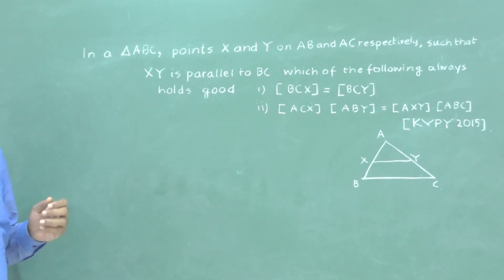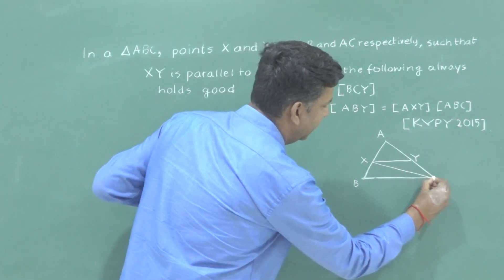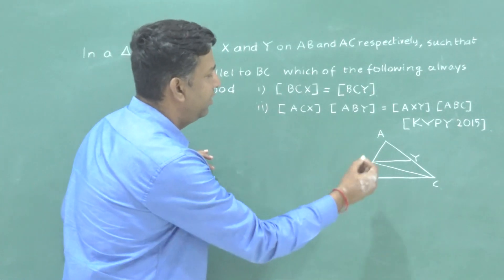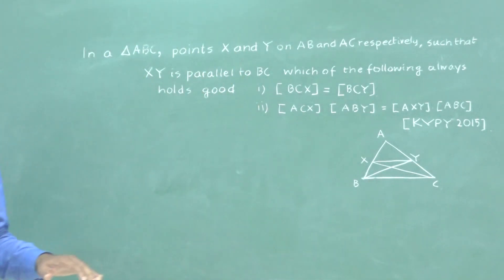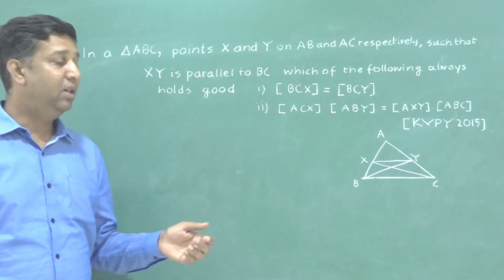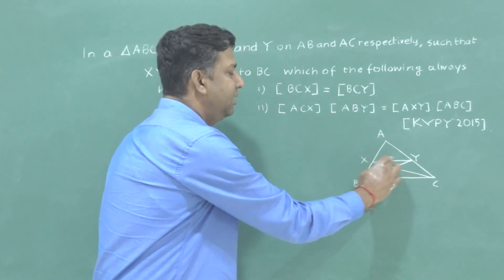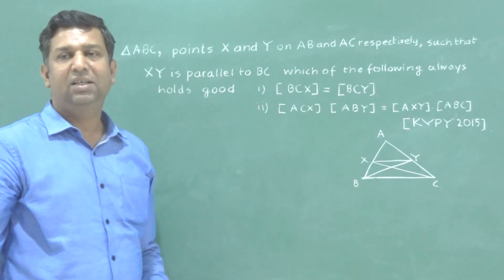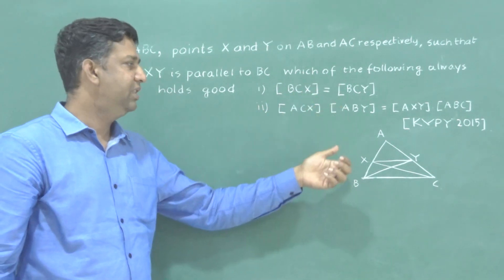What is good? So the first option, if you see, it's quite easy. And if I draw BCX, it's a triangle. And the base is BC. And if I draw the other one, BCY, this is also a triangle on the same base. And we know in 10th standard, we learned that the areas on the same base and between same parallels will have equal area. And this box represents area. So the first one is pretty obvious that BCX is equal to area of BCY.